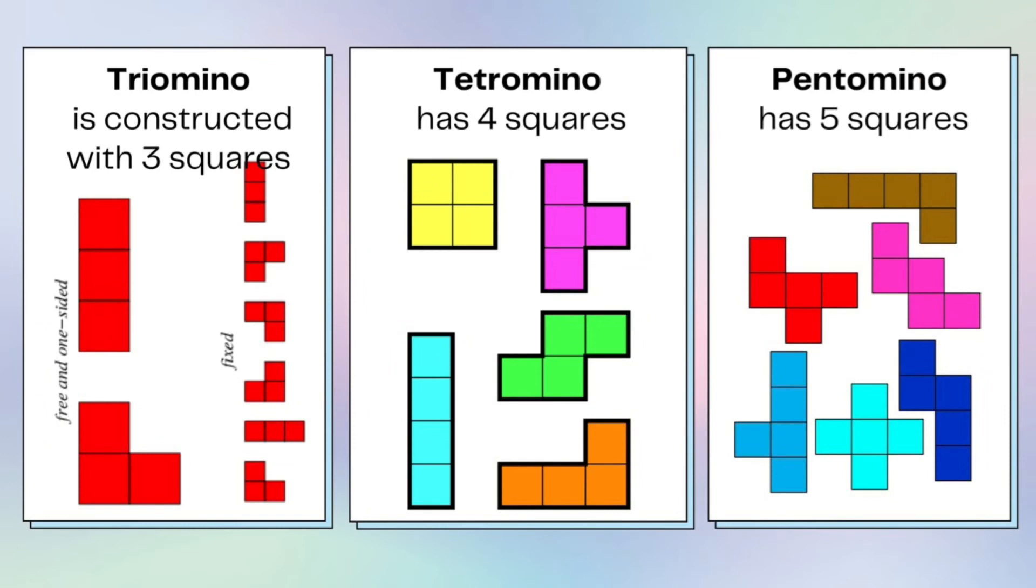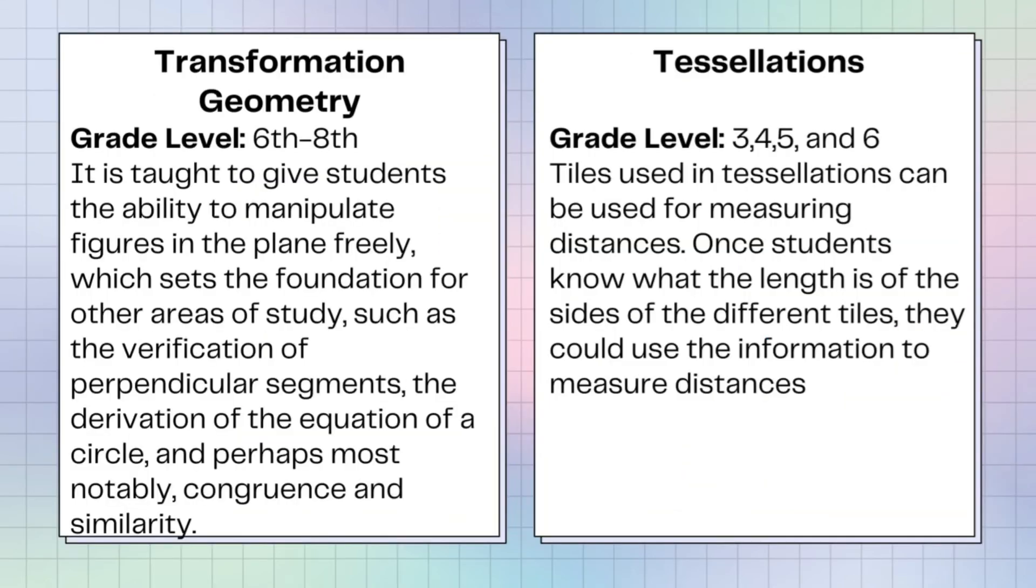When it is constructed with three squares, it is called triomino. When it is constructed with four squares, it's called tetromino. When it's five squares, it's called pentomino. Transformation geometry is taught in the year level 6 to 8. It is taught to give students the ability to manipulate figures in the plane freely which sets the foundation for other areas of studies such as the verification of perpendicular segments, the derivation of the equation of a circle, and perhaps most notably, congruence and similarity. Tessellations is taught in grade level 3, 4, 5, and 6. Tiles used in tessellations can be used for measuring distances. Once students know what the length is of the sides of the different tiles, they could use the information to measure distances.